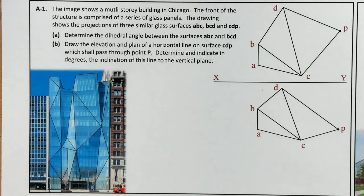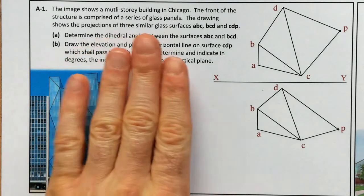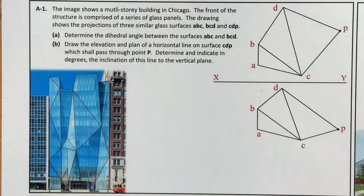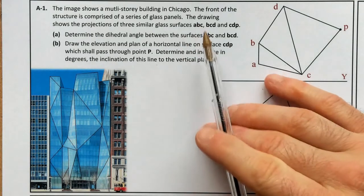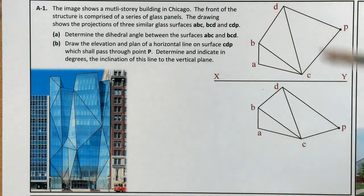Part B says: draw the elevation and plan of a horizontal line on the surface CDP which shall pass through point P. Determine and indicate in degrees the inclination of this to the vertical plane. Starting off with Part A — the dihedral angle — this seems to come up every year in the exam paper in some form.